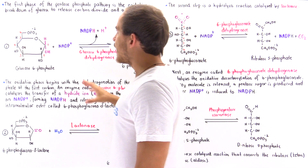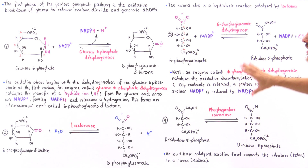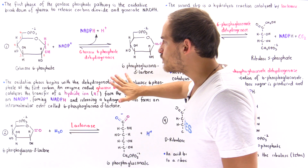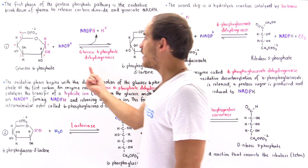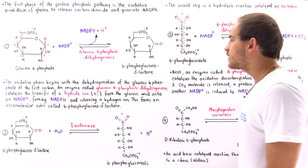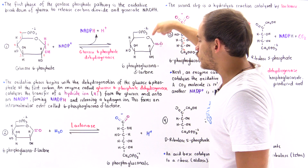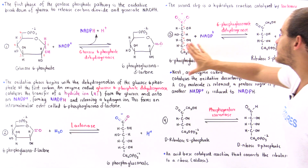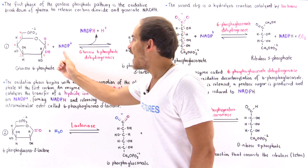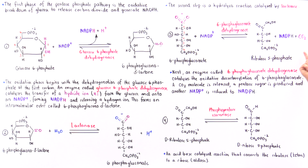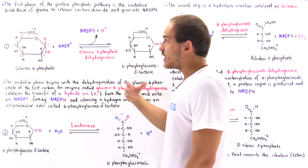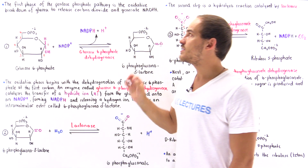In the first phase of the pentose phosphate pathway, we have four steps. In step one, we undergo an oxidation-reduction reaction in which we generate the first NADPH molecule. In step two, we open up the molecule to prepare it for step three. In step three, we generate another NADPH molecule and release carbon dioxide to generate a pentose sugar. In step four, we transform the ribulose-5-phosphate into its isomer, ribose-5-phosphate, which can then be used in the second phase of the pentose phosphate pathway — the non-oxidative phase.